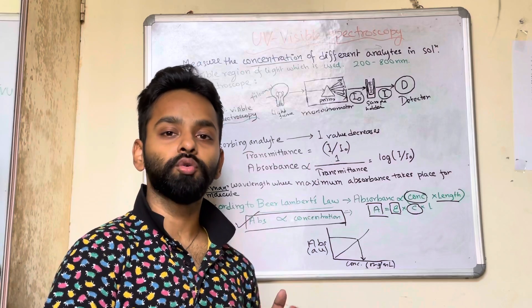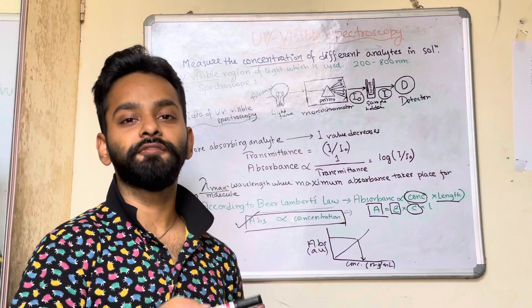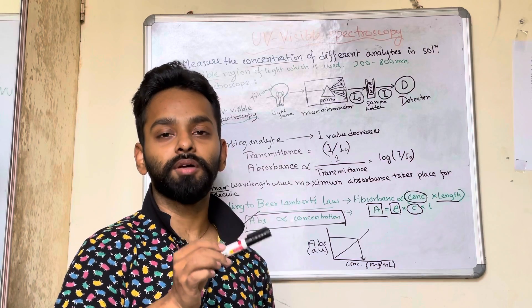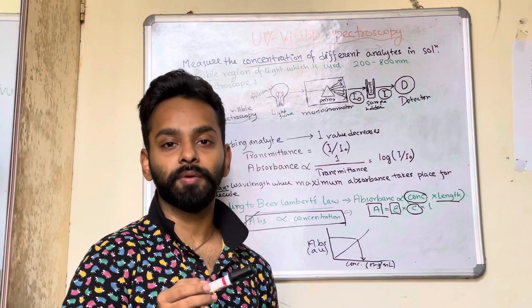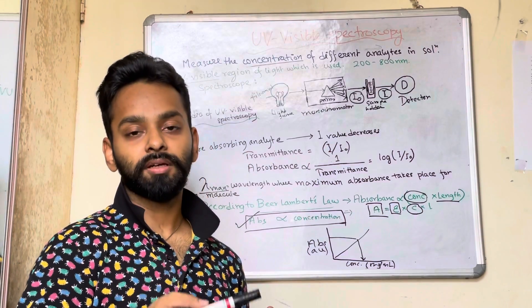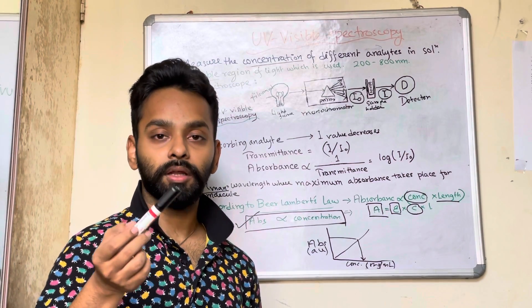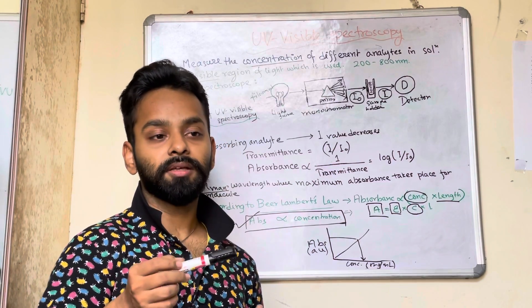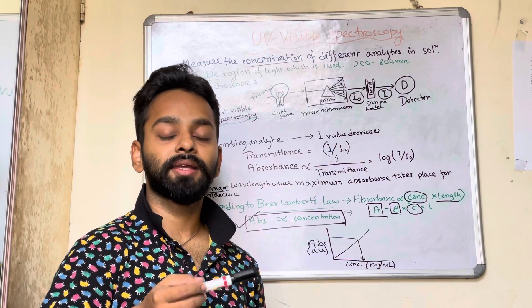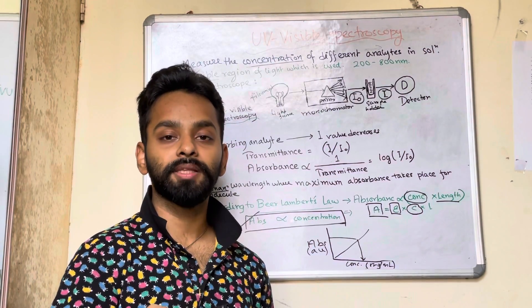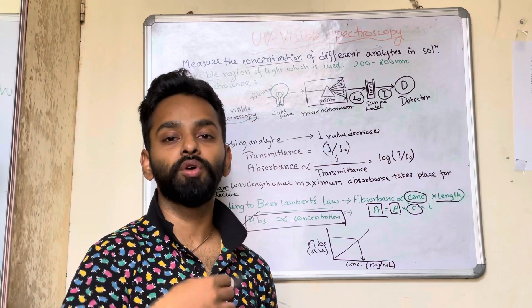The UV-visible region ranges from 200 to 800 nanometers. 200 to 400 nanometers is the UV region, and 400 to 800 nanometers is the visible region. 400 nanometers corresponds to the blue or violet end of the visible spectrum, characterized by lower wavelength, higher frequency, and therefore higher energy. 800 nanometers corresponds to the red region, characterized by a longer wavelength and a lower frequency. Frequency is inversely proportional to wavelength — a longer wavelength means lower frequency and lesser energy.